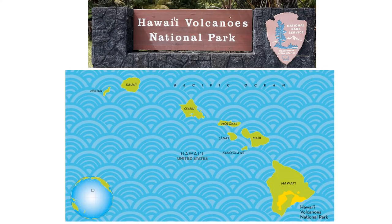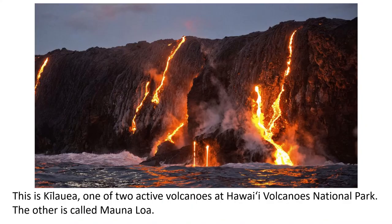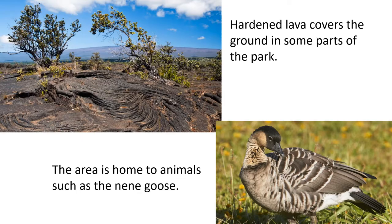Are you ready for a complete opposite? We are now going down to Hawaii, where it is nice and warm, to Hawaii Volcanoes National Park. This is Kilauea, one of the two active volcanoes at Hawaii Volcanoes National Park. The other is called Mauna Loa. Since there are volcanoes, there will be lava, and hardened lava covers the ground in some parts of the park. This area is home to animals, one of them being the nene goose.